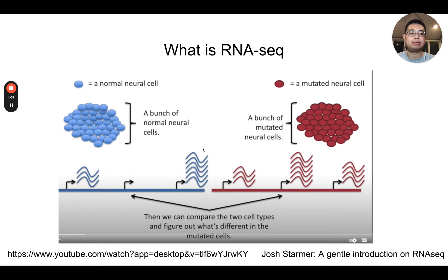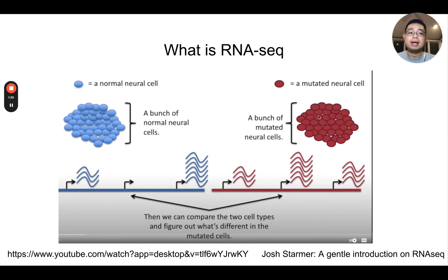In this example, we have two groups of cells — a bunch of normal neuron cells and a bunch of mutated neuron cells. Before single-cell RNA sequencing, it was always bulk RNA sequencing, which means you homogenize all the cells together. Then you extract RNA from both the normal and mutated cells, and do reverse transcription to get the cDNA. Because the sequencing machine usually measures short reads, ranging from around 40 to 200 base pairs, you need to chop the cDNA into small pieces and put them on a sequencing machine.